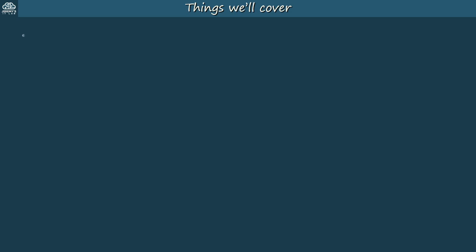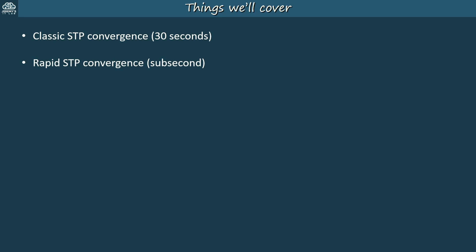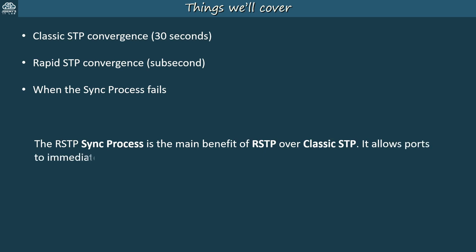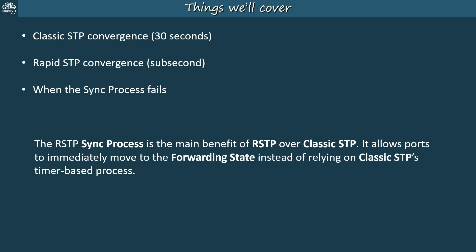Here's what we'll cover in this video. First, a very brief review of classic STP convergence, which takes 30 seconds or even 50 seconds in some situations. Then we'll move on to rapid STP convergence, which is often sub-second, enabling practically immediate convergence. We'll also cover what happens when the sync process fails, for example when using the RSTP shared link type on a port. The RSTP sync process is the main benefit of RSTP over classic STP — it allows ports to immediately move to the forwarding state instead of relying on classic STP's timer-based process, and classic STP's slow convergence times simply aren't acceptable in modern networks.